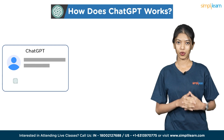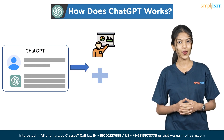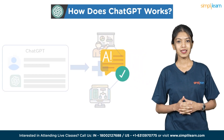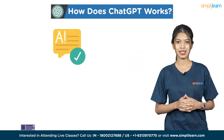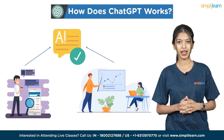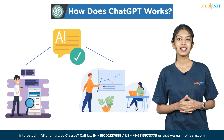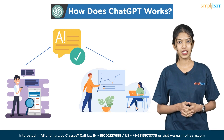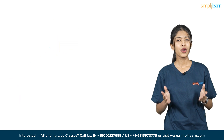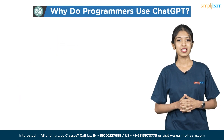The ChatGPT system allows users to enter text or queries, and then the system uses its training data and algorithms to produce the right answer. The answer is created after the input text has been examined and the patterns most likely to match the input have been identified using the training data. In short, ChatGPT is designed to respond to queries logically and more quickly and accurately.